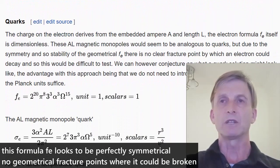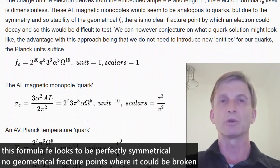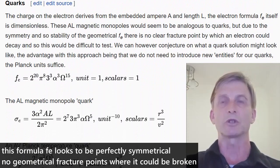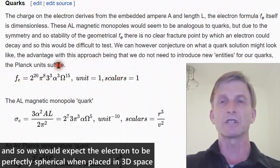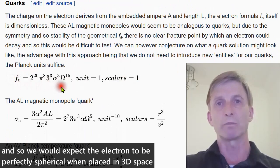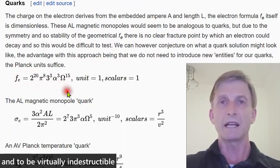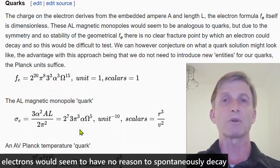This formula Fe looks to be perfectly symmetrical. No geometrical fracture points where it could be broken. And so we would expect the electron to be perfectly spherical when placed in 3D space and to be virtually indestructible. Electrons would seem to have no reason to spontaneously decay.